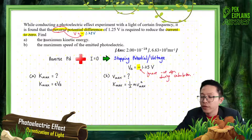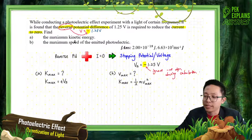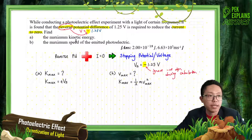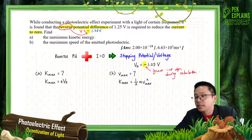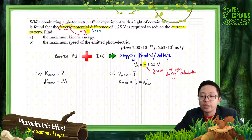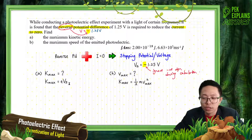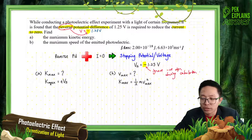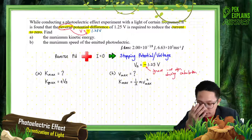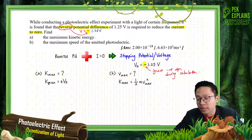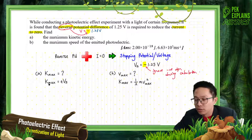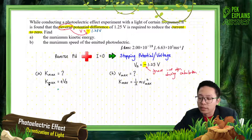So find Kmax — the maximum kinetic energy of the ejected electron. The maximum kinetic energy is related to the stopping voltage. The stopping voltage will stop the electron with maximum kinetic energy from reaching the anode. Kmax equals eVs, where e is the electron charge, 1.6×10⁻¹⁹.